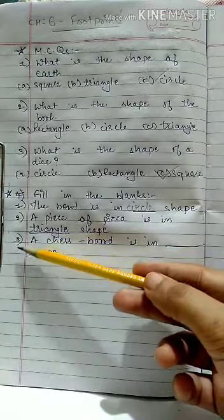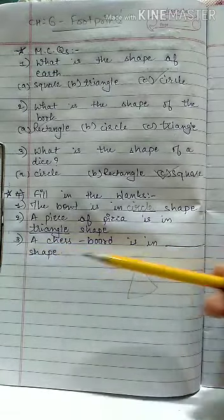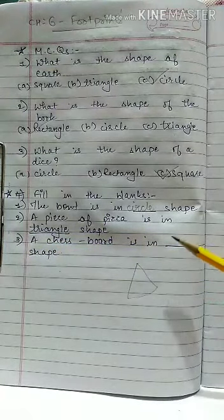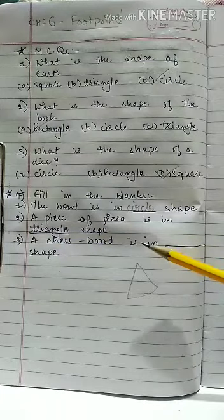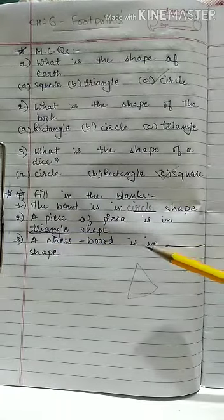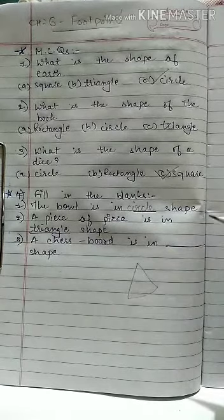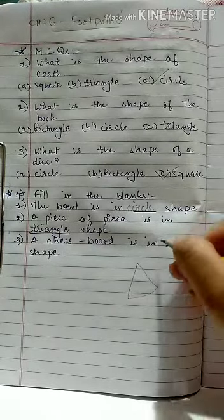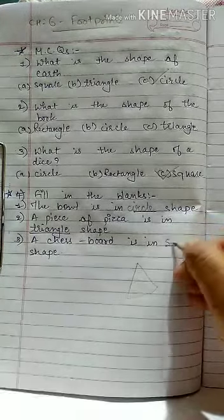Now question number 3: A chess board is in blank shape. Which shape is a chess board? So here the right answer is square.